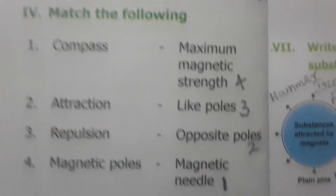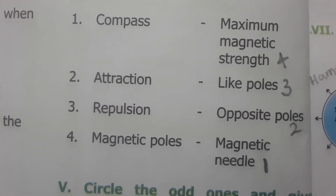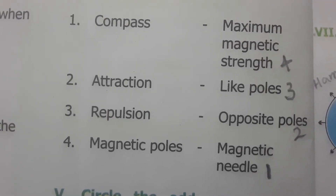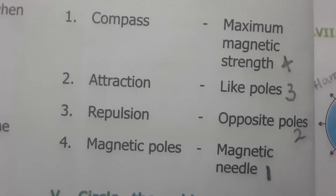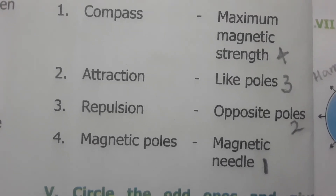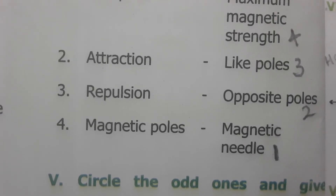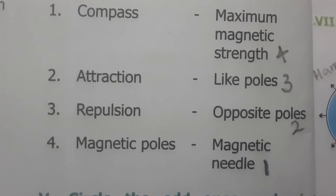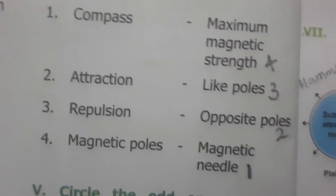For match the following: a compass is a magnetic needle because it is attracted by magnets. Attraction refers to opposite poles — the north pole of one magnet and the south pole of another magnet attract each other. Repulsion refers to like poles, which never attract. Magnetic poles are the regions where maximum magnetic strength is found — only the north and south pole regions, not the middle.